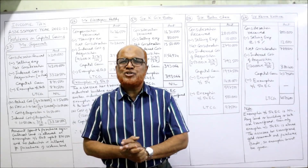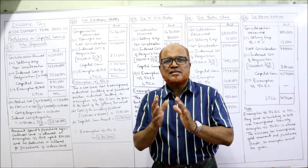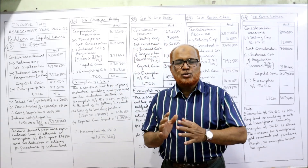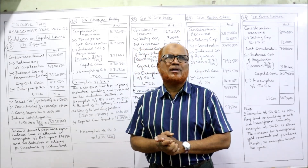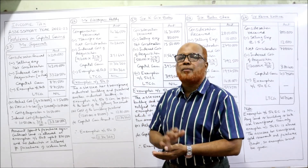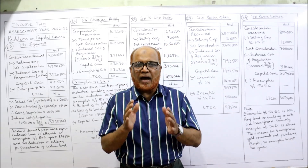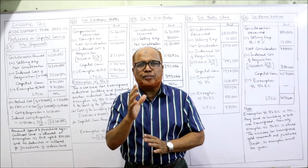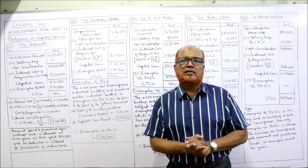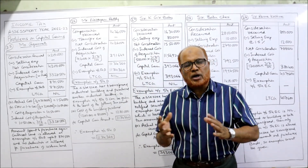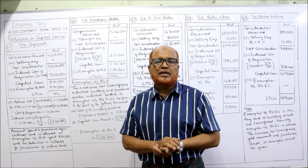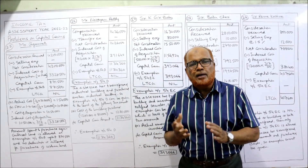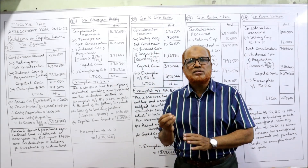Hello viewers, welcome to my channel. I'm Harsham Ali Khan. This is the last and final video on the problems of capital gain. So far in the last six or seven videos I have completed 24 problems on capital gain, and in this video I am going to explain the last five problems. After watching all these videos, I hope you got a good command on this topic. Comparatively, this head of income is simple compared to other heads like salary income, house property, or business and profession.